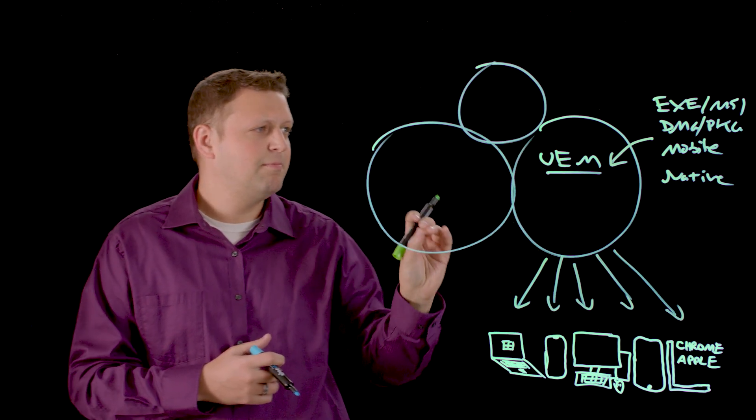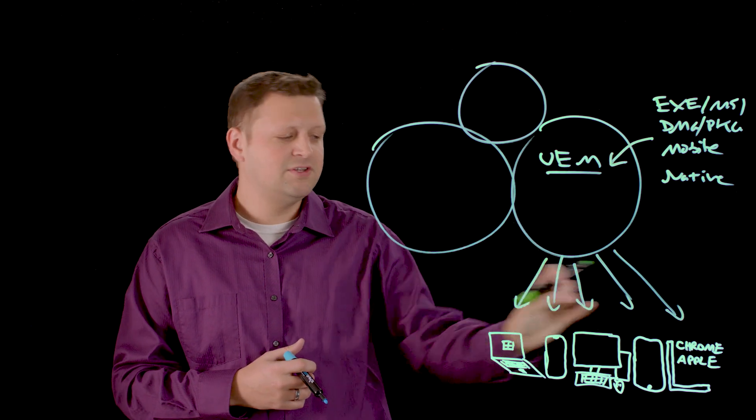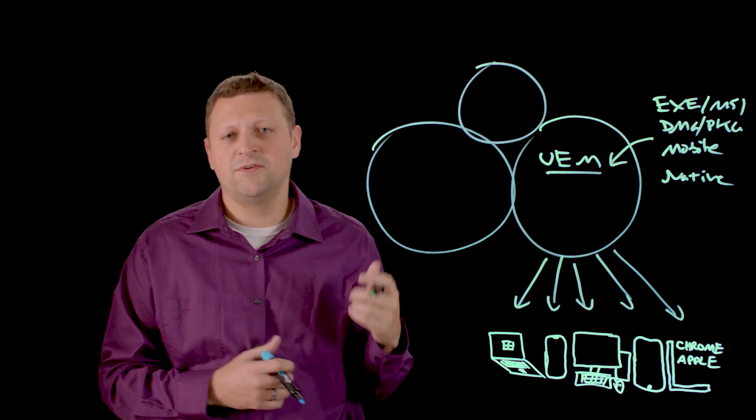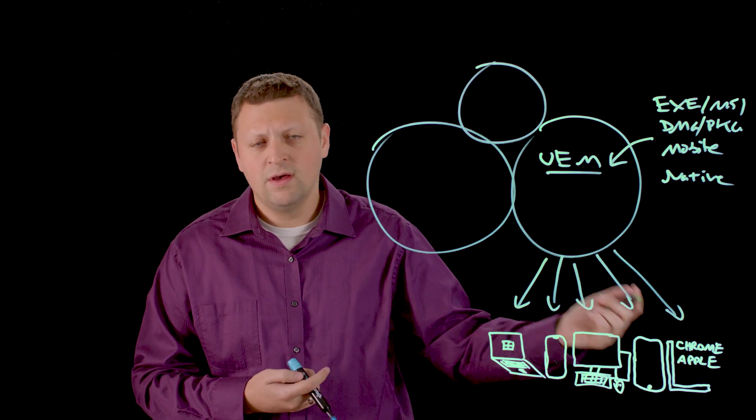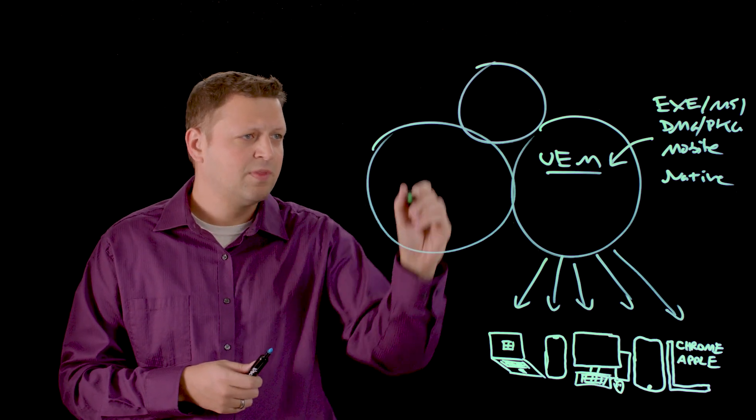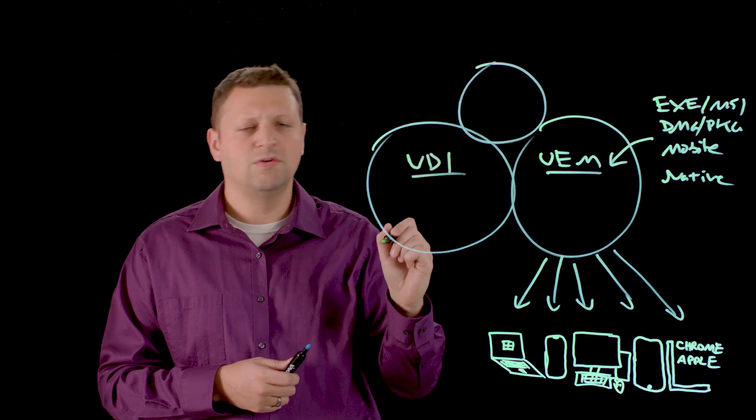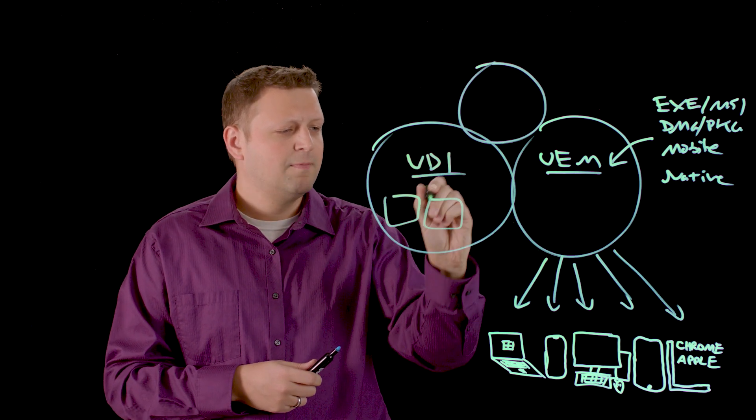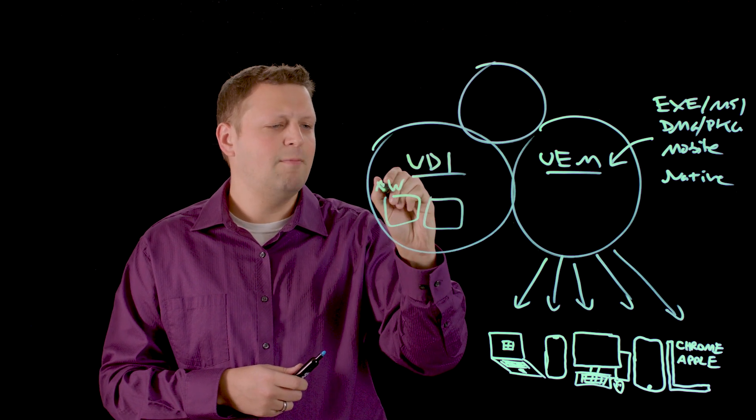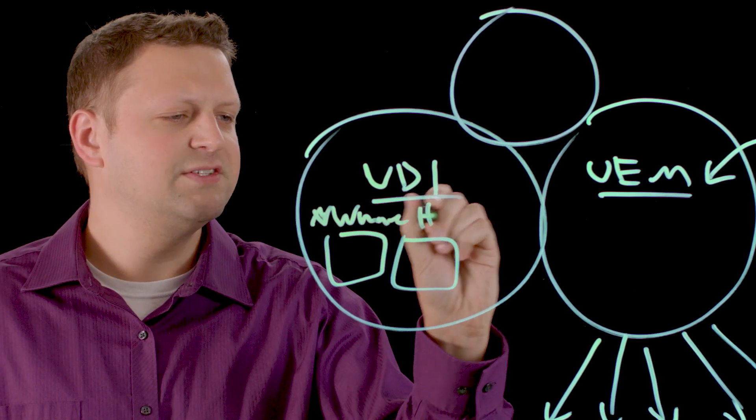Now there are some applications that might not be native for each of these platforms, and a great example of that is if you're running Microsoft Visio, that's not going to run on a MacBook natively. So how do we handle something like that? That's where we bring a component to bear known as Virtual Desktop Infrastructure which has been around for quite some time. This product in the VMware stack is VMware Horizon.